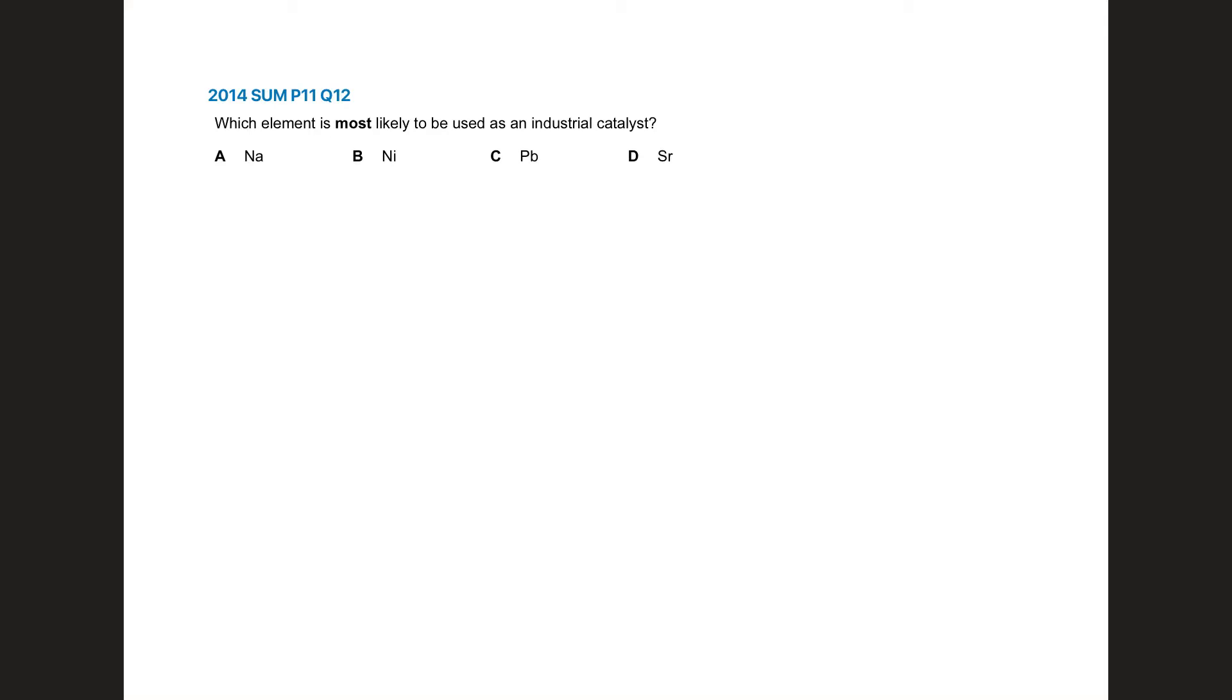Which element is most likely to be used as an industrial catalyst? You have sodium, nickel, lead, and strontium. Out of these four you have nickel as a transition element. The answer is B.